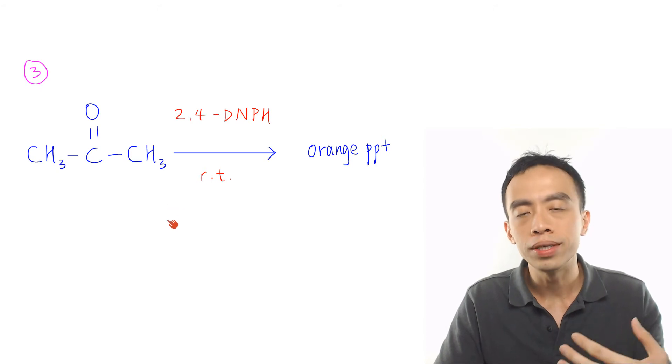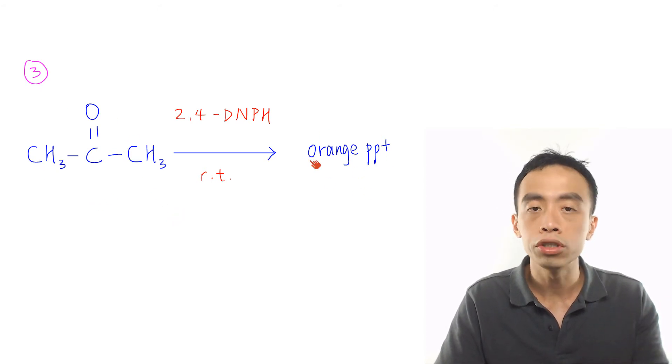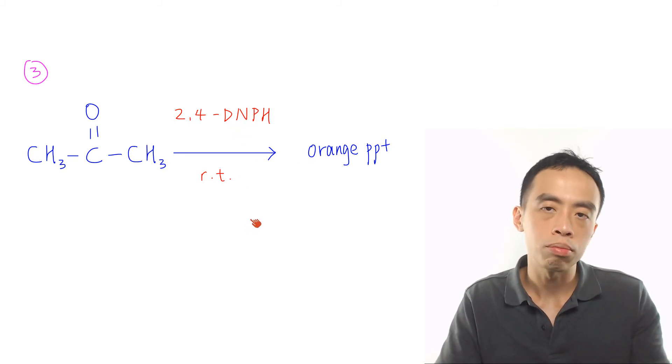Must-know reaction number 3 would be the condensation reaction of ketones to give us our orange precipitate. This is done using 2,4-DNPH at room temperature.